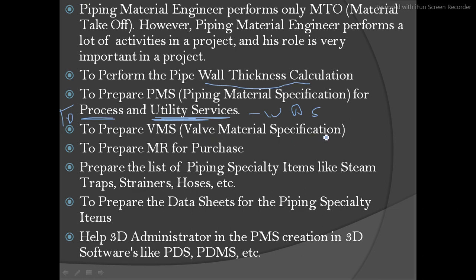Other responsibilities include preparing VMS wall material specifications, preparing MR for purchase, preparing the line list, piping special items like steam traps, strainers, hoses, etc., and preparing data sheets for piping special items. They also help the 3D administrator in PMS creation in 3D software like PDS and PDMS. When a spec is made, it is given to an admin person for the backend, and when modelers start modeling, they select the proper spec as per the line number. Without a spec, you cannot create a line.